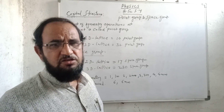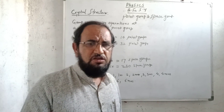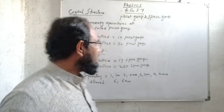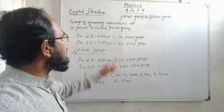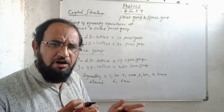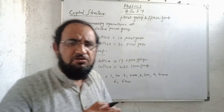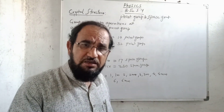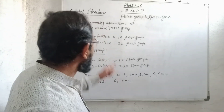So what is a point group? We are going to perform certain operations about a point. The group of symmetry operations at a point is called a point group — meaning how many allowed operations we can perform: translation, rotation, inversion — whatever allowed operations are performed about a point in two dimensions as well as in three dimensions. It is known as the point group.